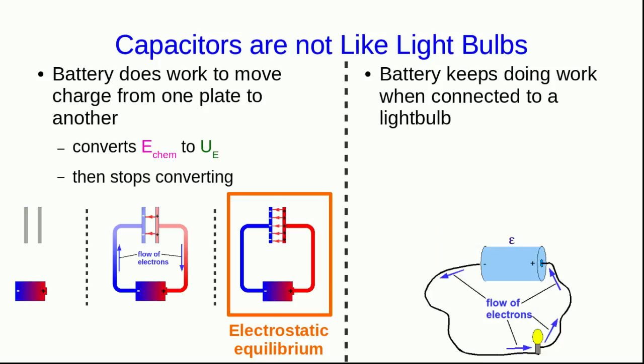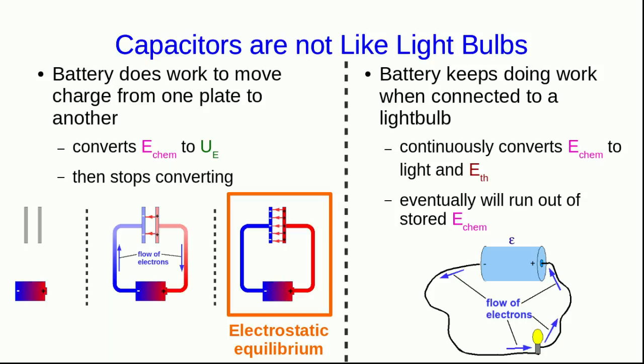On the other hand, when you connect a battery to a light bulb, the battery keeps doing work. Because to make the light bulb work, it is pushing electrons out of the negative terminal of the battery, they're pushed through the light bulb, and they arrive back at the positive terminal of the battery. And this process just goes on and on. And so the battery is continually transporting electrons from its positive terminal to its negative terminal, doing work on them in the process. And so it's converting chemical energy into light, which isn't energy but does carry energy, and in most light bulbs into thermal energy as well. But unlike with the capacitor, that process will eventually run down because the battery is consuming its chemical energy, since it's continuously converting it into other forms.